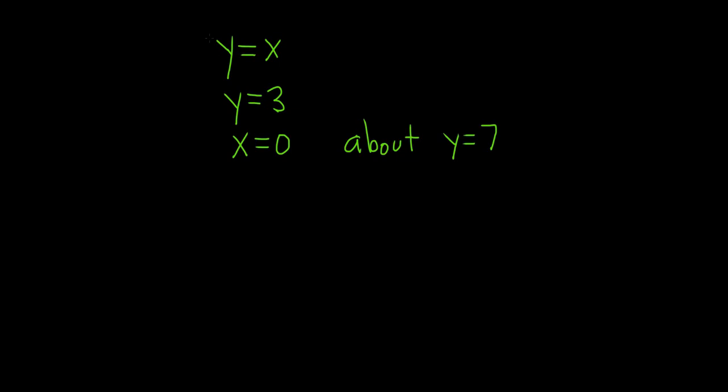In this problem we have a region bounded by the graphs of y equals x, y equals 3, and x equals 0. And we have to rotate it about the line y equals 7, and then find the volume of the resulting solid.